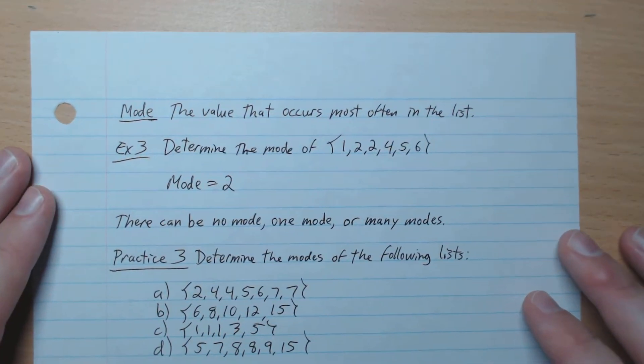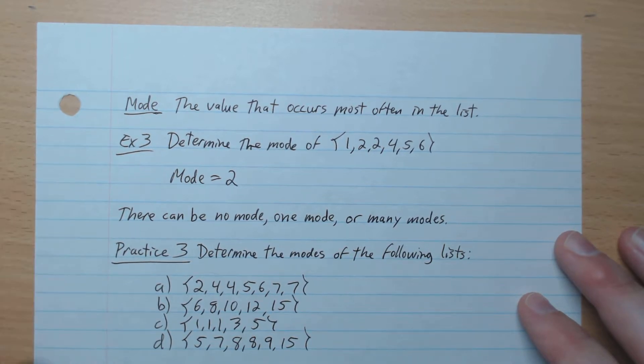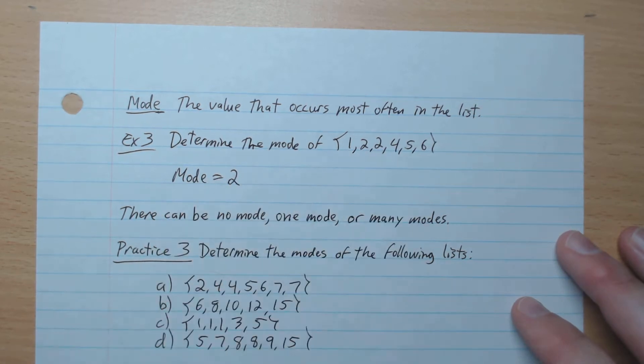Okay, and last but not least, the mode. So the value that occurs most often in the list, that's what the mode is. So we look at this list, 1, 2, 2, 4, 5, 6, the mode is 2.